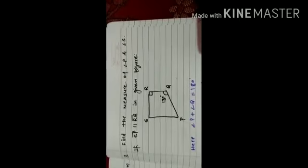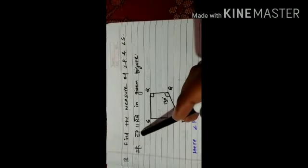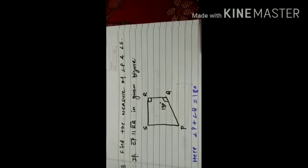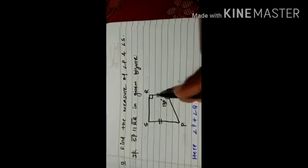Okay students, now the last question of the exercise 3.3 is find the measure of angle P and angle S if SP is parallel to RQ in the given figure. Students, this figure is PQRS, a quadrilateral. Now we have to find angle P and angle S, and we have to find that SP is parallel to RQ.